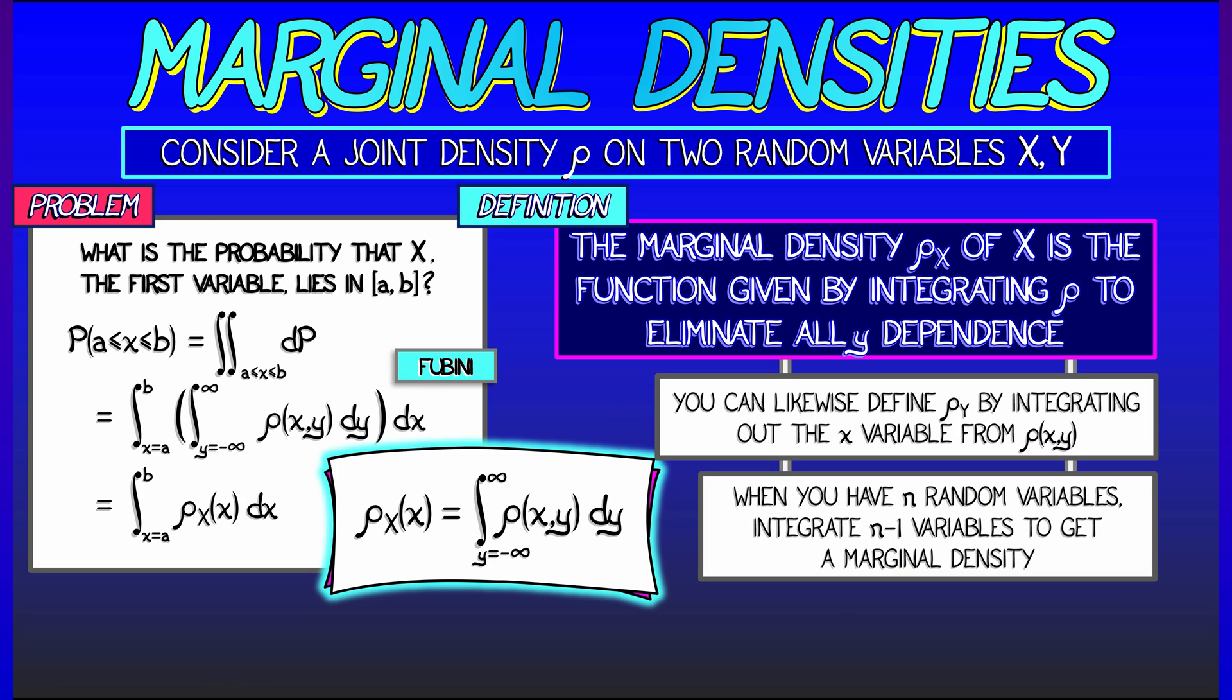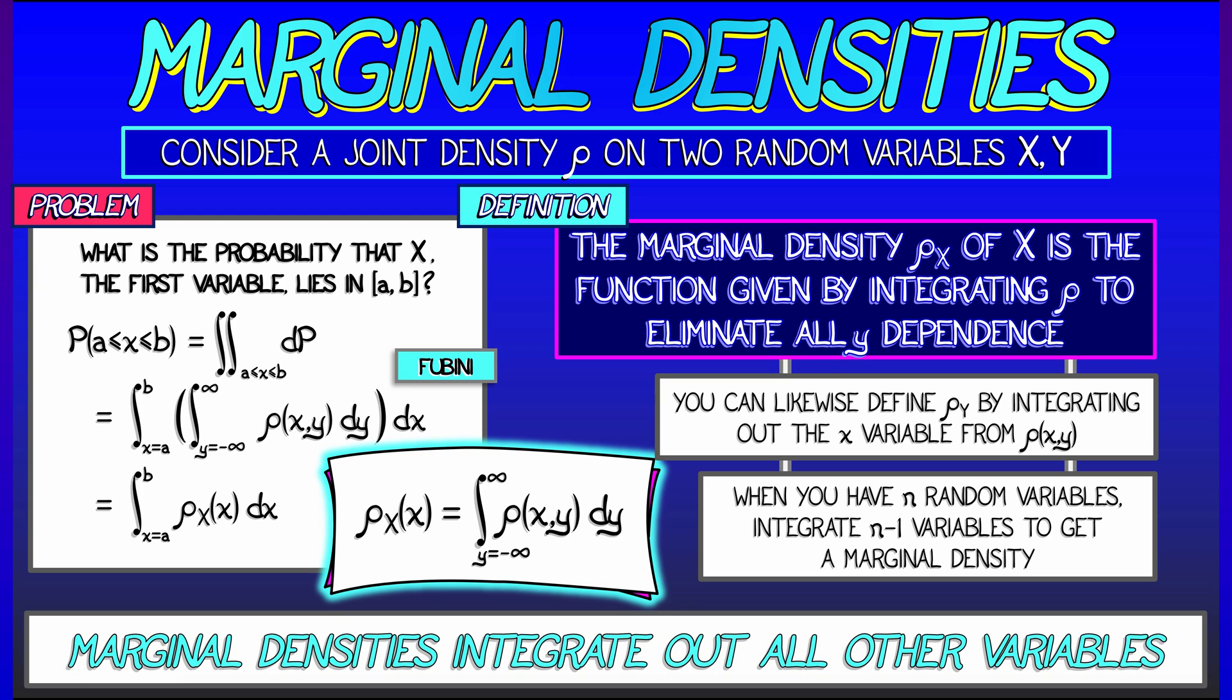Well, if we have more than two random variables, if we start off in Rn, then we can marginalize to get n different marginal densities by integrating out all but one of the variables using Fubini over and over.